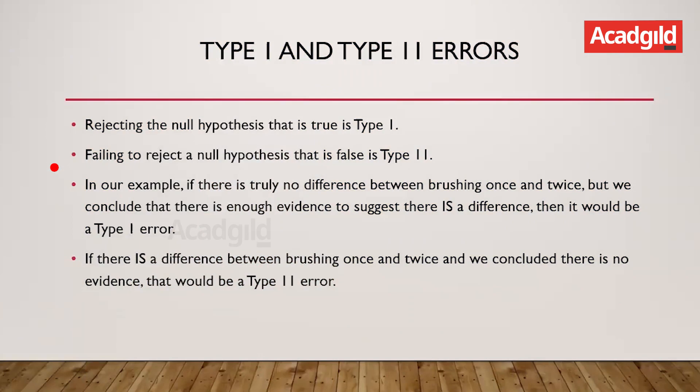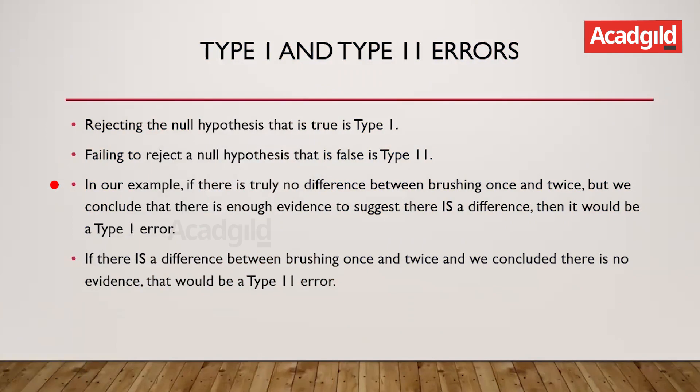In our example, if there is truly no difference between brushing once and twice but we conclude there is enough evidence to suggest a difference, that would be a type one error. If there is a difference between brushing once and twice and we conclude there is no evidence to suggest that, that would be a type two error. We have to decide on the values of alpha and p-value in order to minimize either the type one or type two error, depending on the specific problem we are looking at.